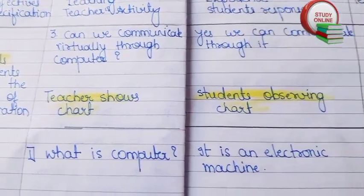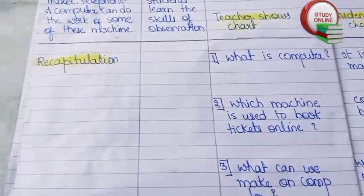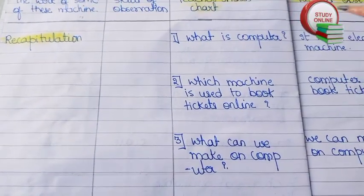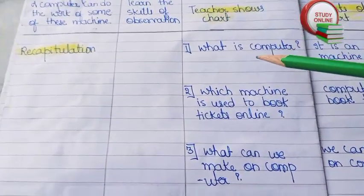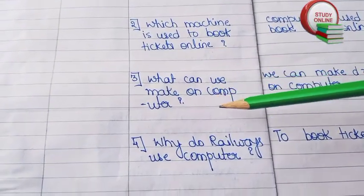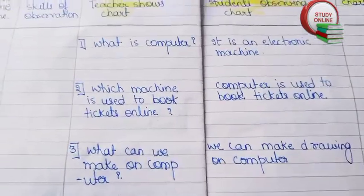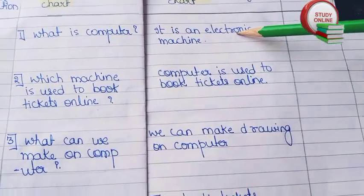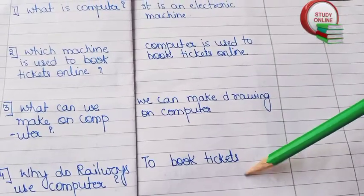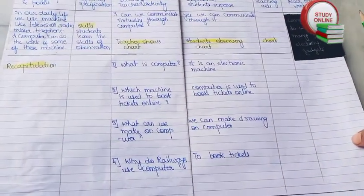The skills section shows the teacher showing a chart and students observing it. For recapitulation, we ask a series of questions: What is a computer? Which machine is used to book tickets online? What can we make on a computer? Why do railways use computers? The expected answers from students are also mentioned here.